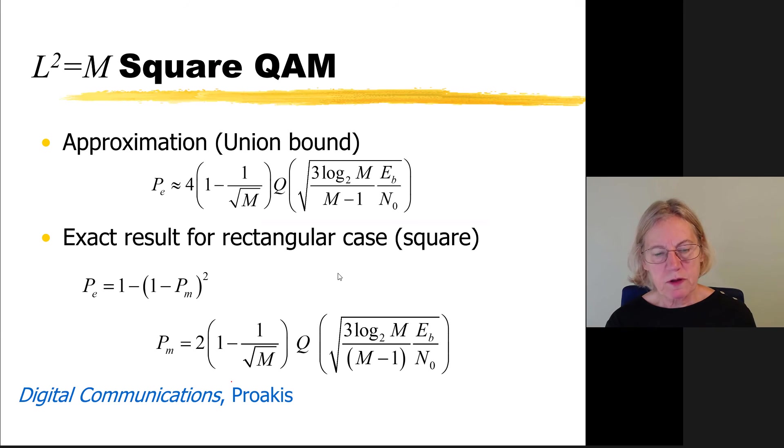It is possible, again, to find in this special case a very symmetric constellation, to come up with a general expression, an exact expression for the rectangular case. I refer you to digital communications Proakis where he has the development of this equation. And you can see that our approximation coming from the union bound is extremely close to the exact value. In fact, it's just a multiplicative factor in the difference.